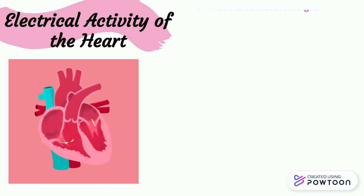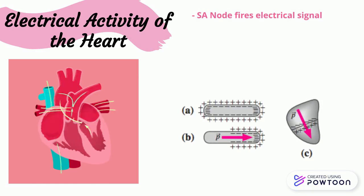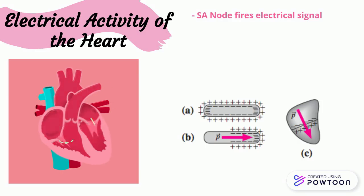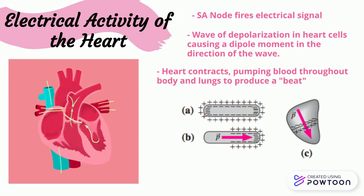The sinoatrial node of the heart sends out an electrical signal that is propagated through heart cells in the form of action potentials. At rest, cells are polarized, so a voltage potential exists across the cell membrane, where more positive charge is on the outside and negative charge on the inside, as shown in figure A. The action potential causes depolarization, briefly switching the positive and negative buildups, causing a dipole moment in the cell, as pictured in figure B. This causes the heart to contract, producing a heartbeat.